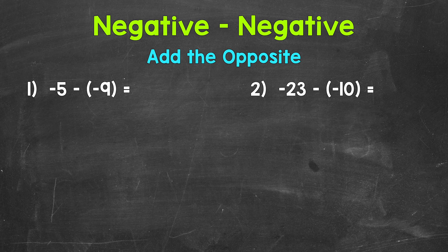Let's jump into number one where we have negative five minus negative nine. Now when we subtract integers we can actually add the opposite. The opposite of subtraction is addition.